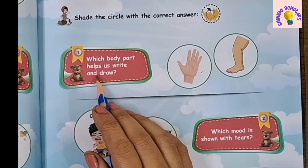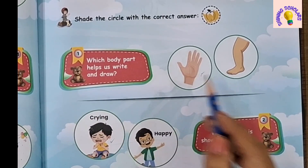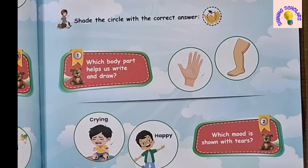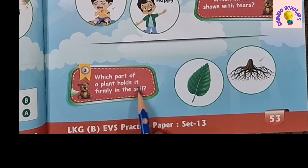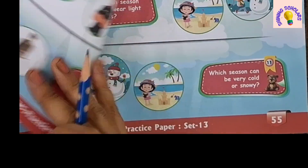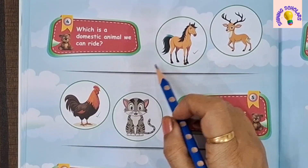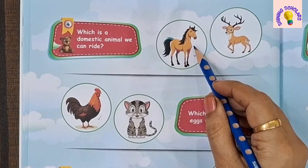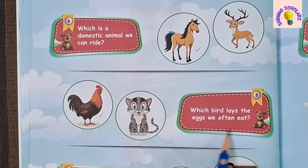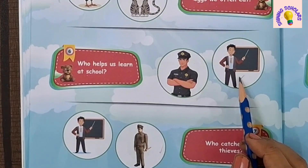Next set. First question: Which body part helps us write and draw? Our hand. Which mood is shown with tears? Crying. Which part of the plant holds it firmly in the soil? Roots. Next question: Which is a domestic animal we can ride? Horse. Which bird lays the eggs we often eat? Hen. Who helps us learn at school? Teacher.